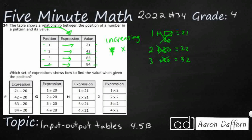If I can't add, then I'm going to need to multiply. Something times 1 is going to get me 21. Well, 1 times anything is itself, so if I want to end up with 21, I need to multiply 1 times 21. And 1 times 21 is 21. Let's see if that holds true for the rest of them.